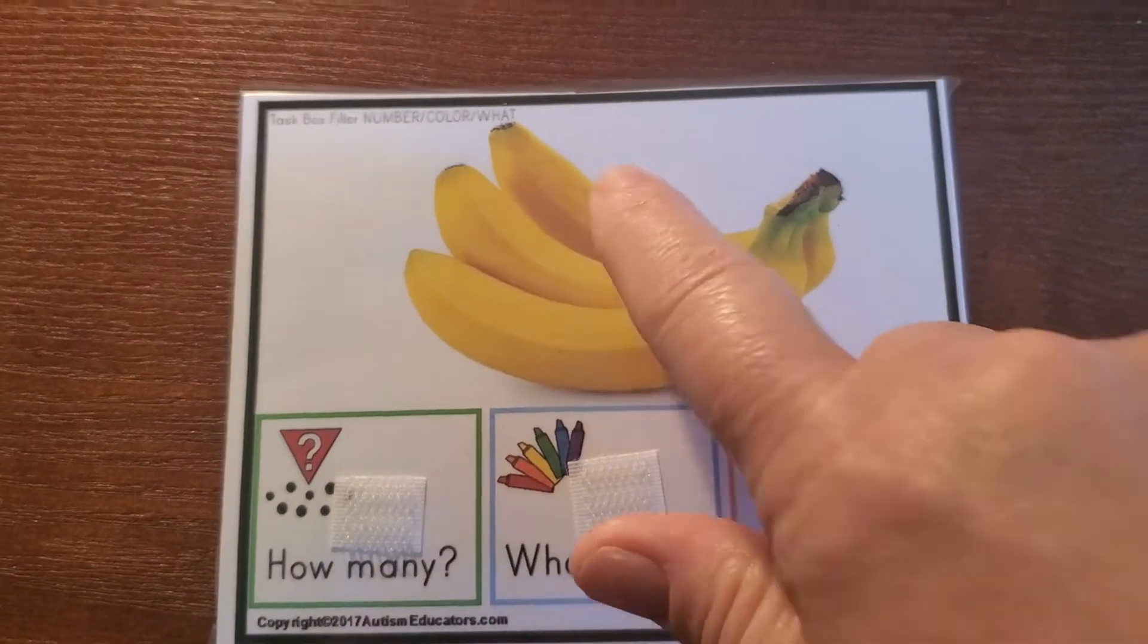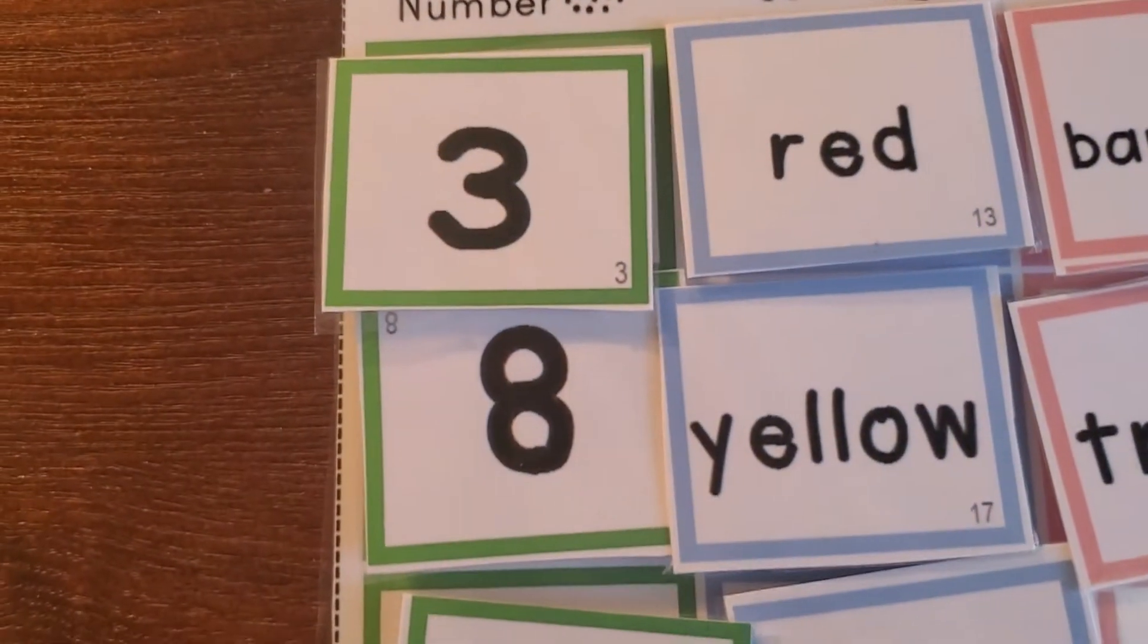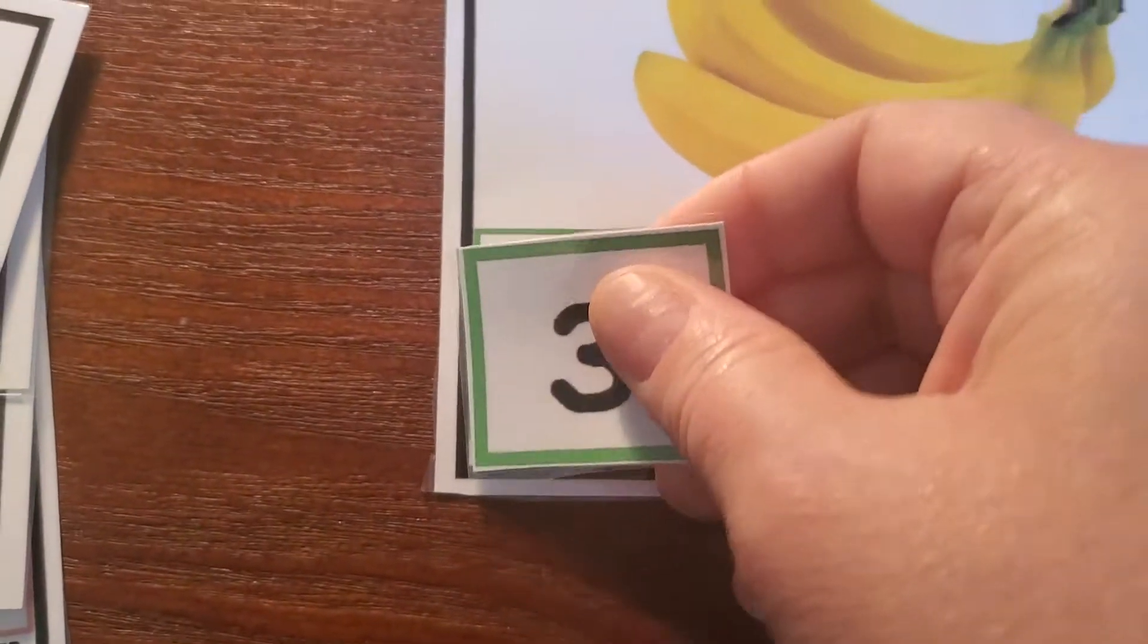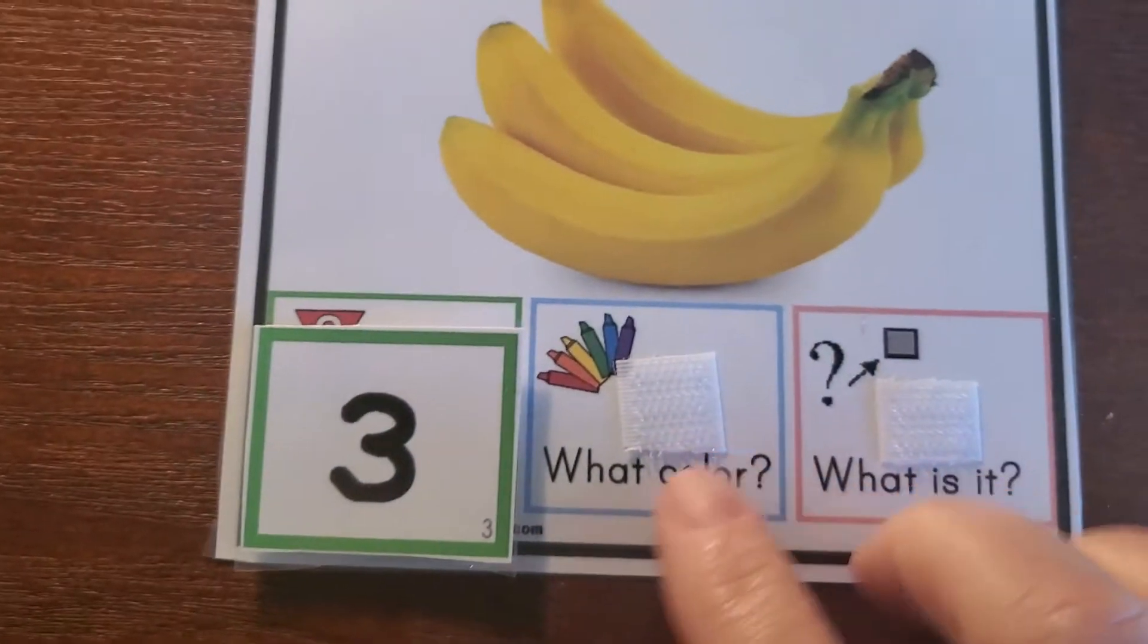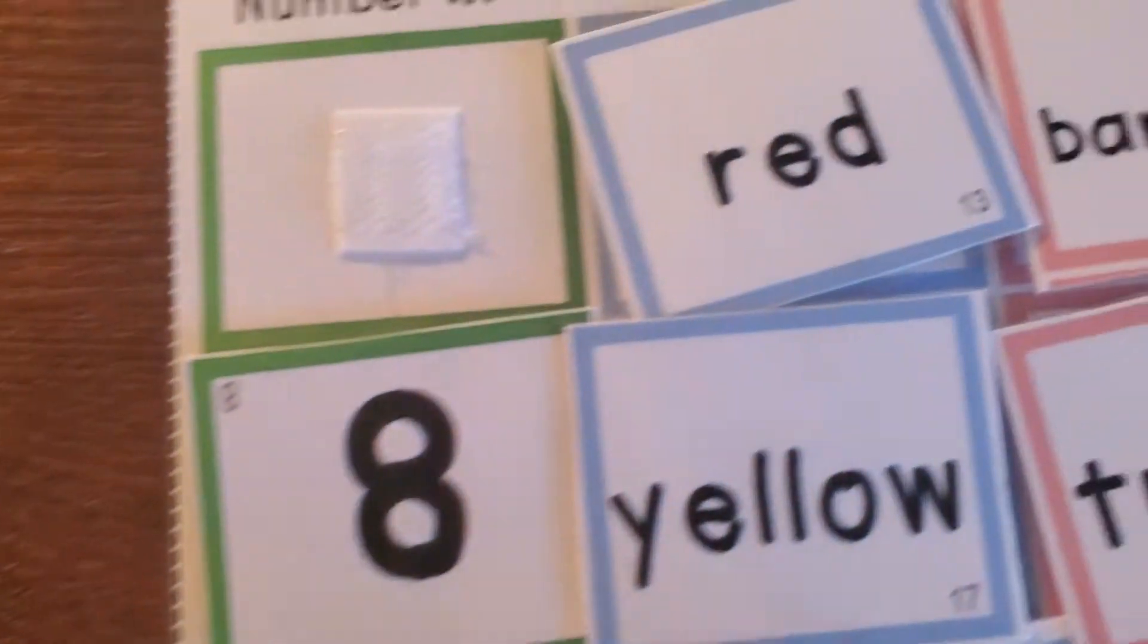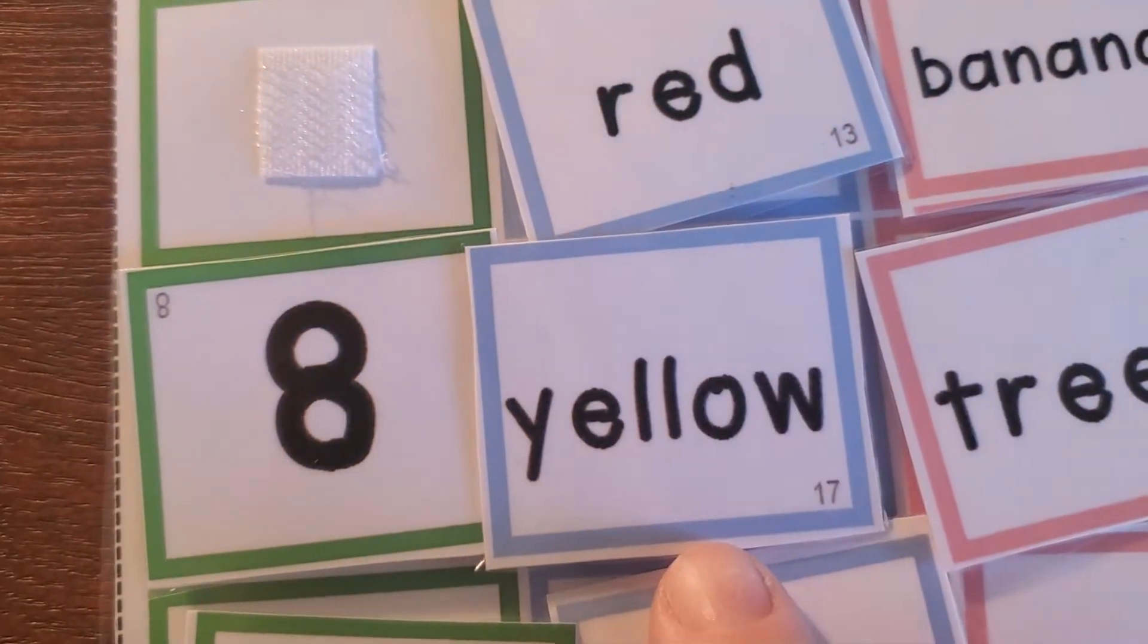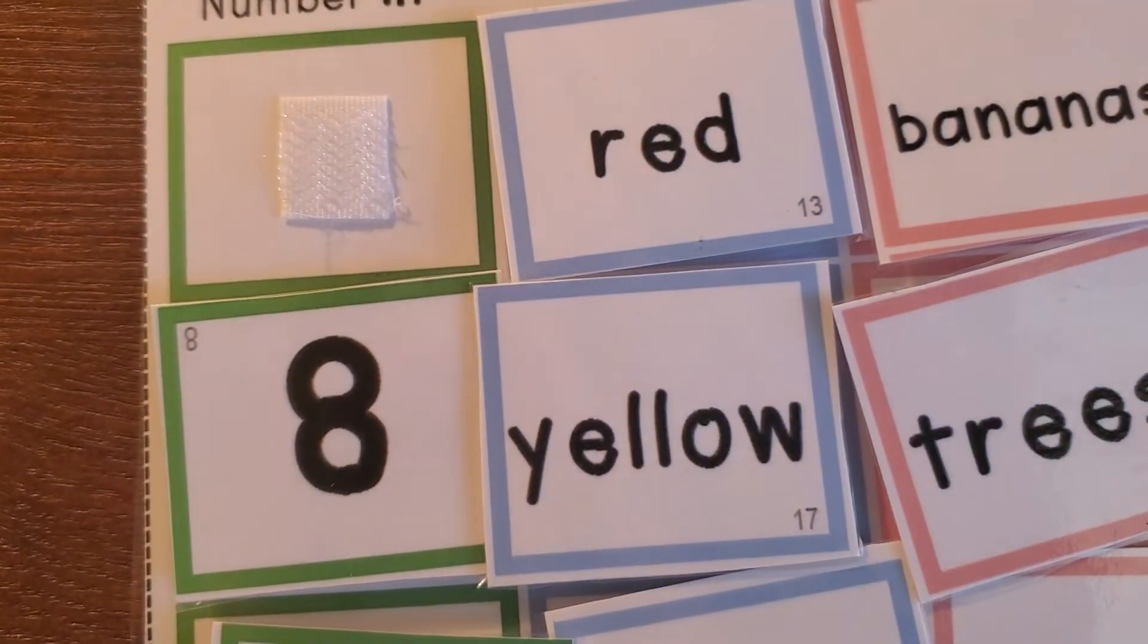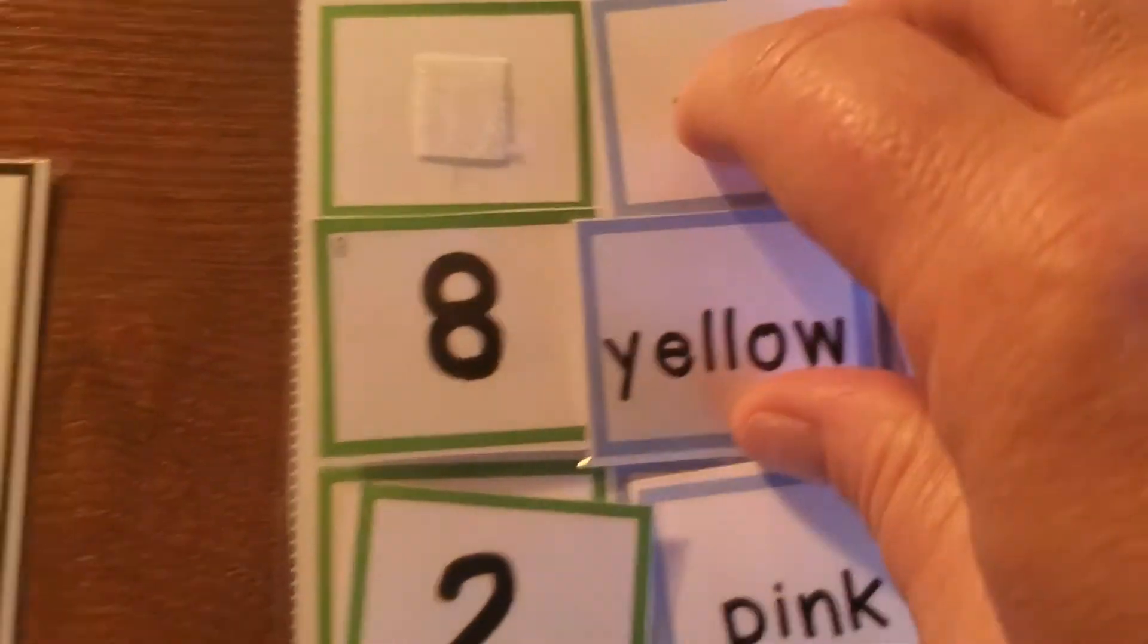One, two, three. Do you see number three? What color is this? Which one of these says the color that it is? It's yellow, isn't it?